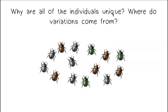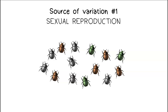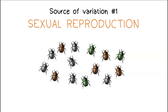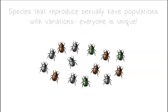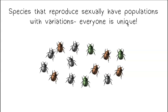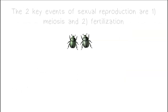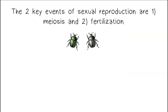Why are all of the individuals unique? And where do variations come from? Our first source of variation is sexual reproduction. Species that reproduce sexually have populations with variations — everyone is unique. This is because of processes during sexual reproduction that result in unique gene combinations. The two key events of sexual reproduction are meiosis and fertilization.